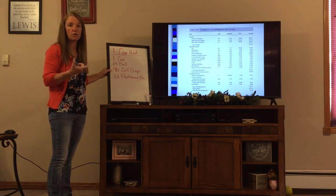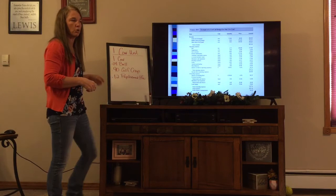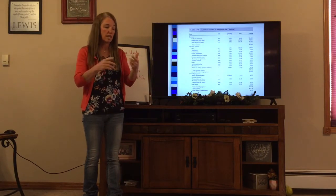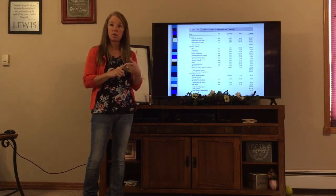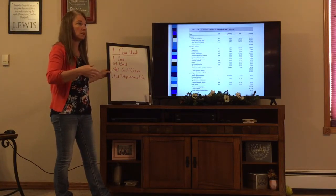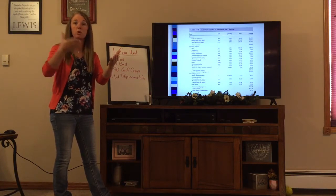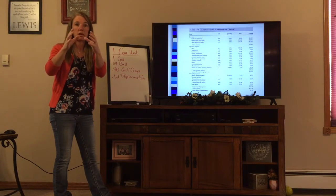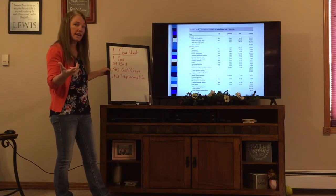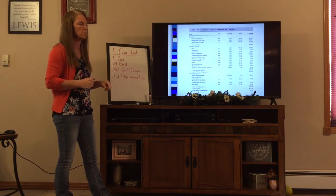Then we're going to assume a calf crop percentage so we know how many we're going to be selling. For sheep budgets, a percentage like 180% might be used, because on average you'd expect singles, twins, and triplets, falling somewhere just below the twin point. On cattle, we're usually looking at a 90 to 92% calf crop as the most common values. But you can adjust that calf crop percentage to your own numbers.